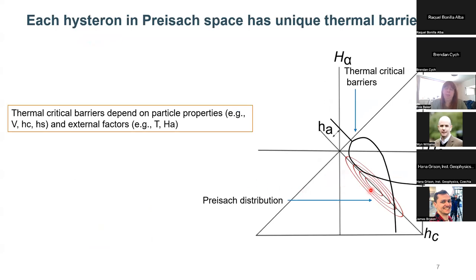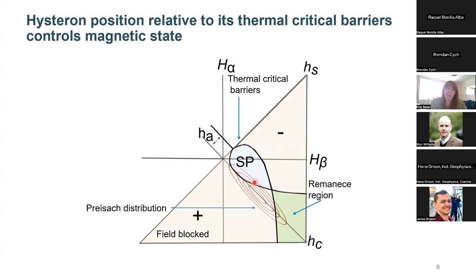We can use Preisach space to model magnetic processes because each hysteron has its own thermal critical barriers, which depend on properties such as temperature, applied field, and particle properties like coercivity, interactions, and volume. Depending on where the hysteron lies relative to its thermal critical barriers controls its magnetic state. If a particle lies inside the superparamagnetic region, it has high thermal activation and no long-term magnetic remanence. If it lies in the field-blocked regions, it's either positively or negatively magnetized due to large interactions. If it lies in the remanence region, it acquires a magnetic remanence dependent on its thermal history.